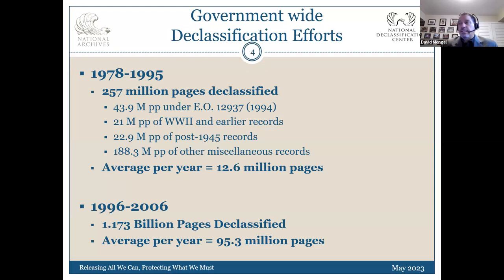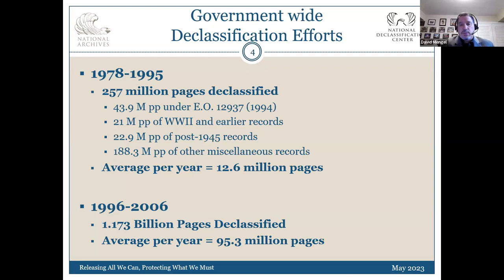FOIA was the primary way that historians and the public were getting access to classified information in the 70s and even up through the 80s. In 1996, President Clinton issued his executive order and introduced something called automatic declassification. Between 1978 and 1995 — roughly a 17-year period — we released about 257 million pages of previously classified records. Once automatic declassification was introduced, over the next 10 years we released 1.1 billion pages of classified records. So you can see that incentive — now we're going to find out why that happened.